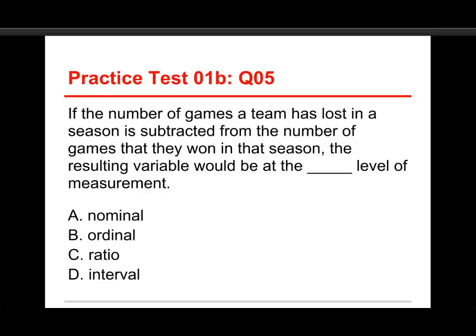The last of the five questions is: if the number of games a team has lost in a season is subtracted from the number of games they won, the resulting variable would be at the blank level of measurement. The choices are nominal, ordinal, interval, and ratio.